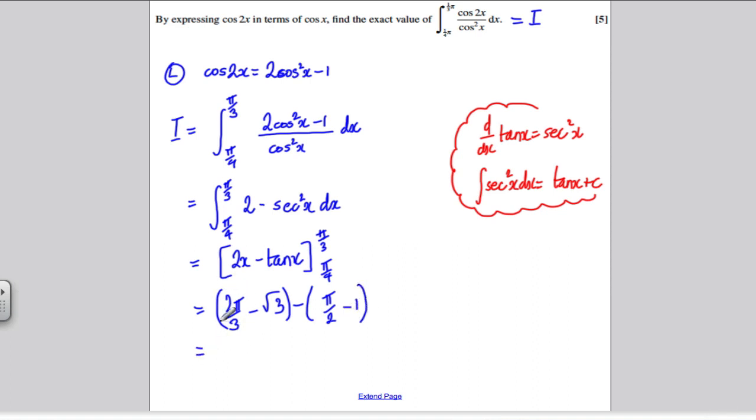So if you work this out, 2 pi over 3, 2 thirds pi, take away pi by 2, so that would simply be pi over 6 if you work that out, and you get minus root 3 minus minus 1, which would be plus 1, so it would be minus root 3 plus 1.